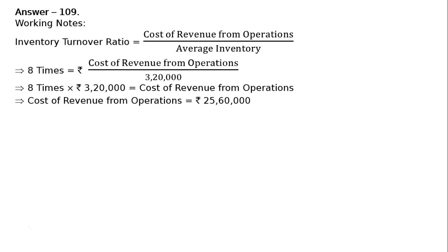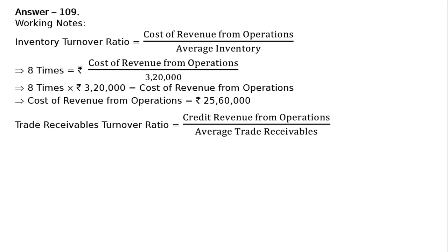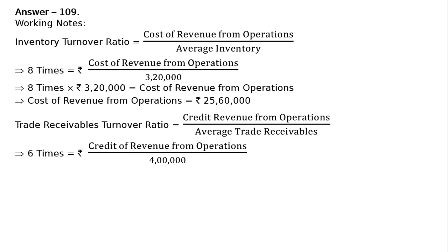Receivable turnover ratio is 6 times. Trade receivables turnover ratio equals credit revenue from operations upon average trade receivables. That is 6 times equals credit revenue from operations upon average trade receivables, which is given as rupees 4,00,000.